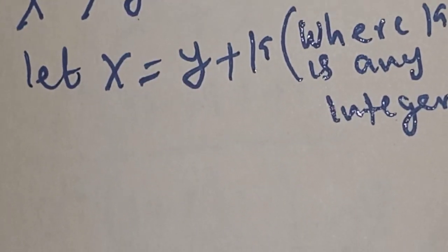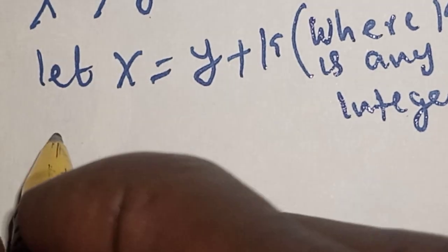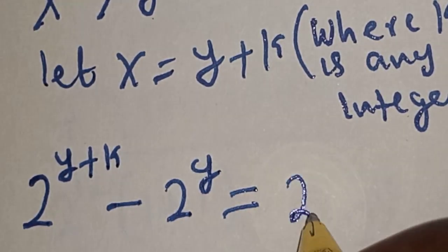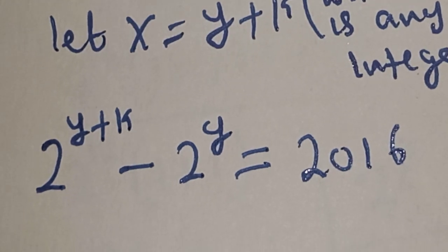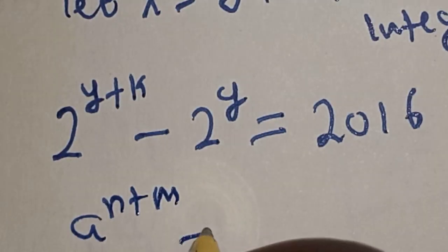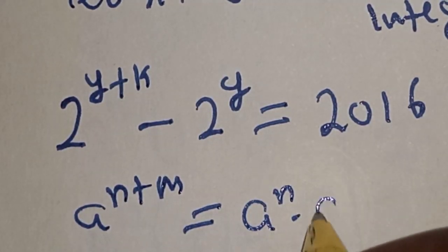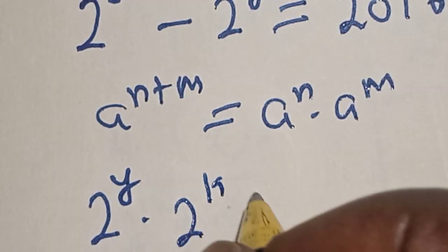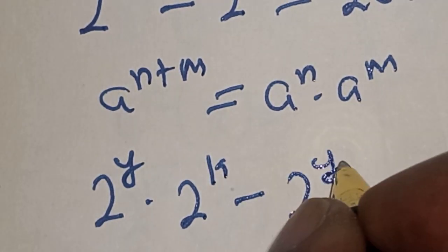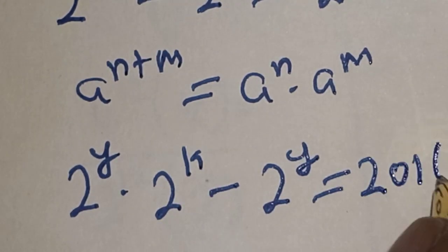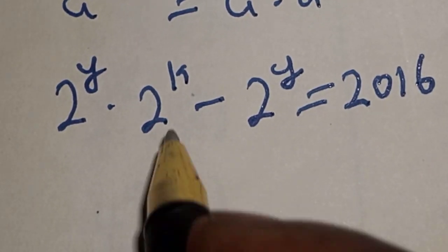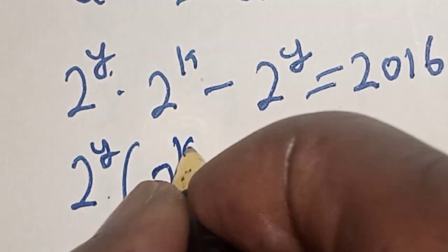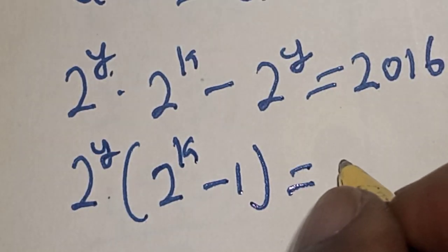Substituting, we get 2 raised to power (Y plus K) minus 2 raised to power Y is equal to 2016. Using the exponent rule that A raised to power (N plus M) equals A raised to power N multiplied by A raised to power M, we get 2 raised to power Y multiplied by 2 raised to power K minus 2 raised to power Y equals 2016. Since 2 raised to power Y is common, we factor it out.